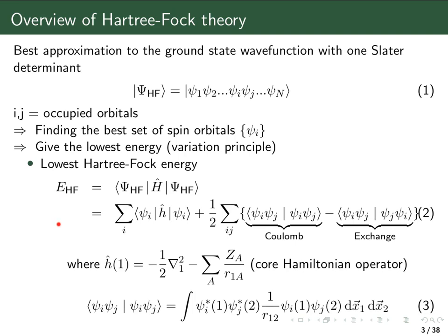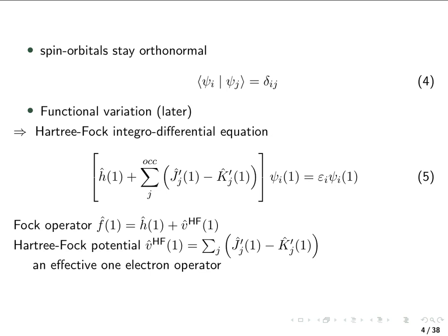So this is the expression for the Hartree-Fock energy. What we have to do now is, by the variational principle, find spin orbitals which give the lowest value of this energy. This means what we are actually going for are equations for these spin orbitals, called the Hartree-Fock equations. Before we can do that, there is also the condition that the spin orbitals have to stay orthonormal — that's an extra condition used in the derivation. The derivation itself we'll discuss later.